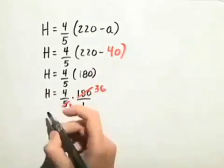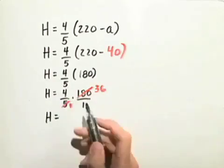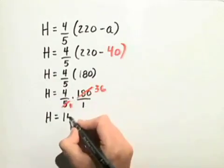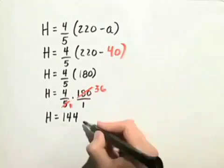So, the heart rate in beats per minute is going to equal 4 times 36 over 1. 4 times 36 is 144 beats per minute.